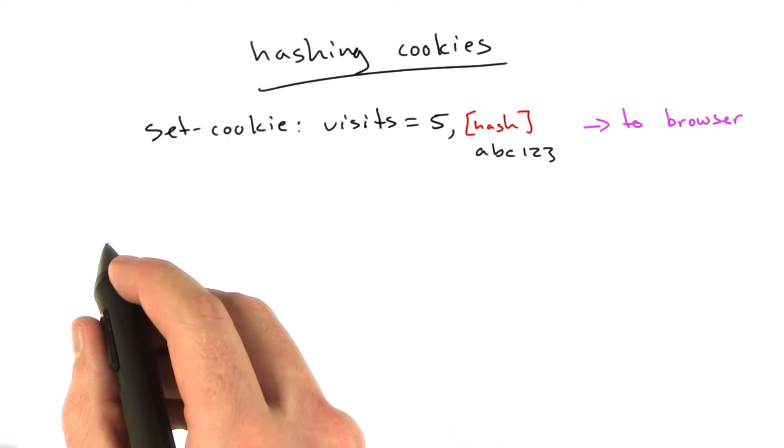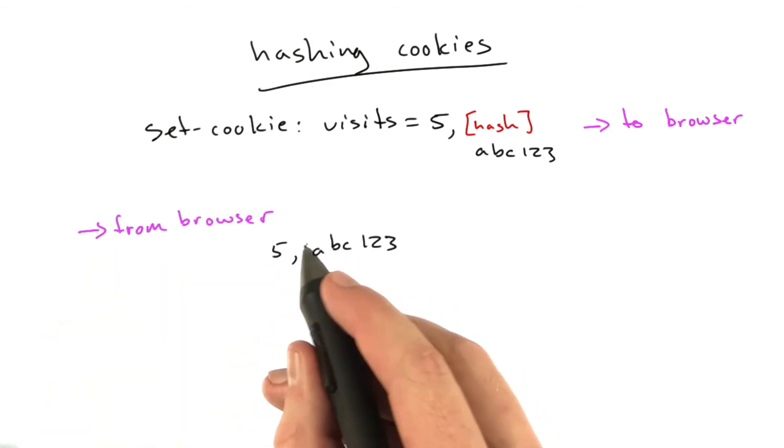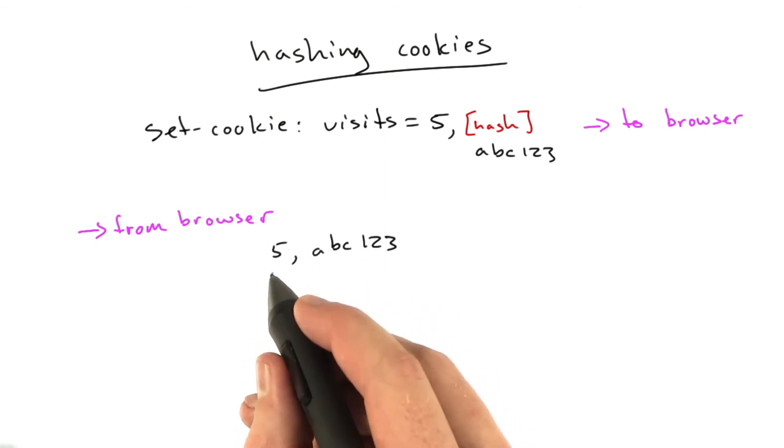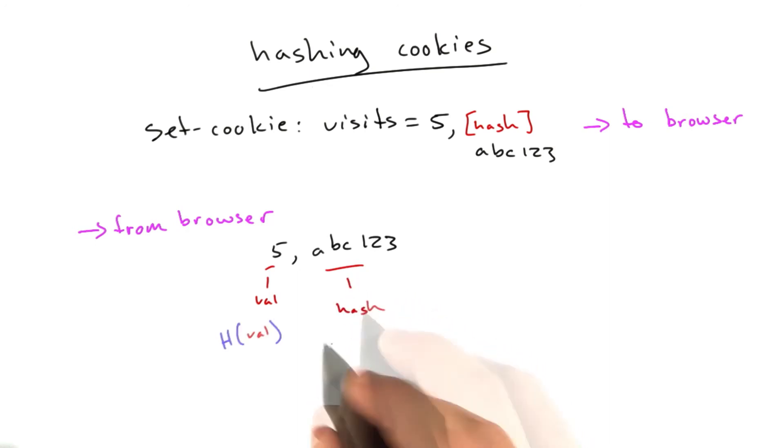When we receive this cookie from the browser, when we receive this 5 followed by our hash, what we're going to do is we're going to break this apart into 2 pieces. This will be like our value, and this will be our hash. We're going to hash this value and check to see if it equals this hash.